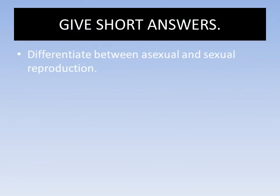Give short answers in your class copy. First, differentiate between sexual reproduction and asexual reproduction. Sexual reproduction is the type of reproduction in which two gametes are involved — one from each parent — combined to form a zygote. Asexual reproduction is the type of reproduction in which a cell from only one parent develops into offspring.